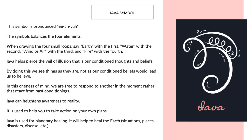The Iyava Symbol. The symbol balances the four elements. When drawing the four small loops, say earth with the first, water with the second, wind or air with the third, and fire with the fourth. Iyava helps pierce the veil of illusion that is our conditioned thoughts and beliefs. By doing this, we see things as they are, not as our conditional beliefs would lead us to believe. In this oneness of mind, we are free to respond to another in the moment rather than react from past conditionings.